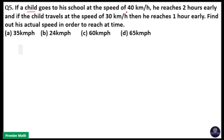If a child goes to his school at the speed of 40 km per hour, he reaches 2 hours early. If the child travels at the speed of 30 km per hour, then he reaches 1 hour early. Find his actual speed in order to reach on time.